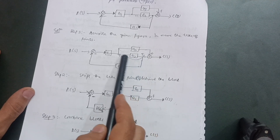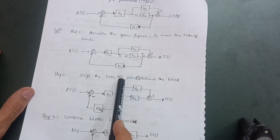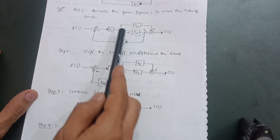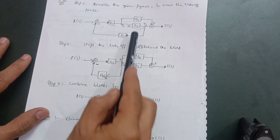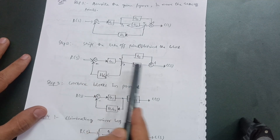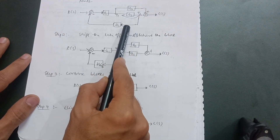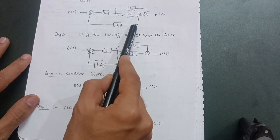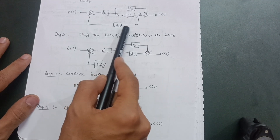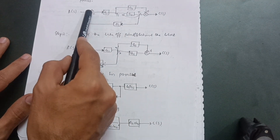When shifting a takeoff point behind the block, you have to add the block value G2 to the feedback line. In the second step, I shift takeoff point T2 behind G2. Here we have G3, G2, and T2 is now shifting backward to this position. Since blocks in series are multiplied, G2 is added with the feedback path H1, giving H1·G2 as the new feedback term.